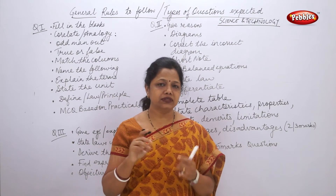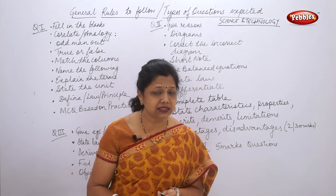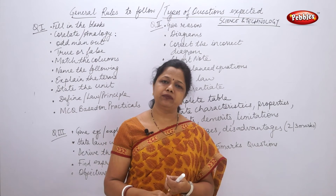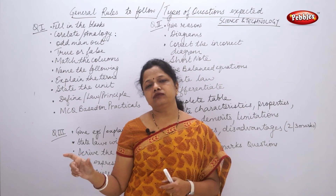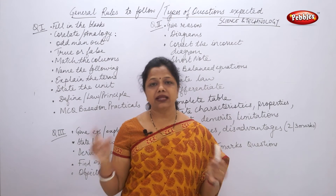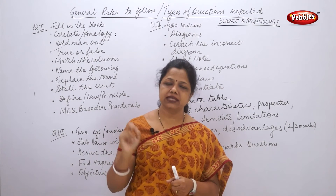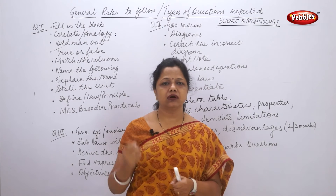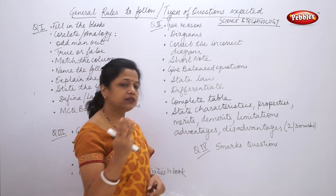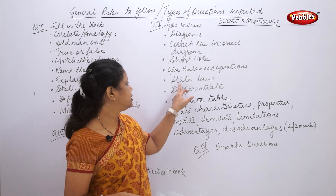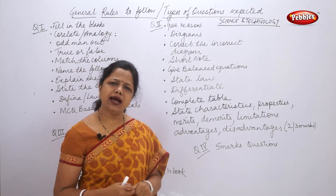Three important things for balanced equations: first, balance with pencil then overwrite with pen; second, write the names of the reactants and products; and third, write the states — whether it is gaseous state, solid state, or liquid state. These three things you must remember.